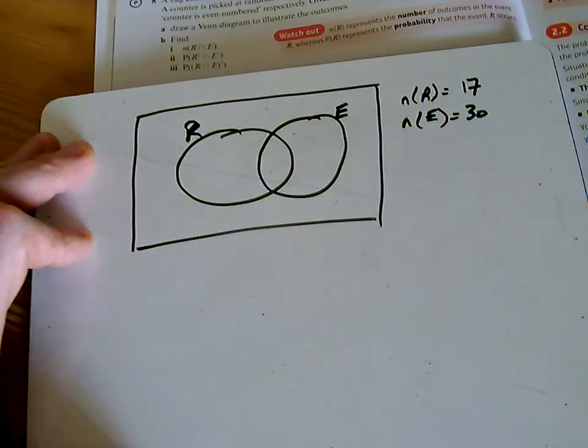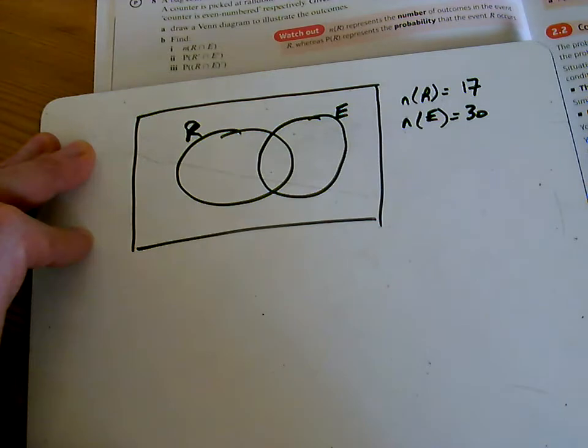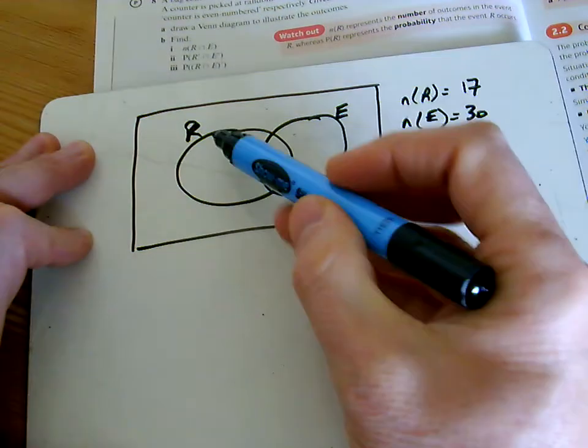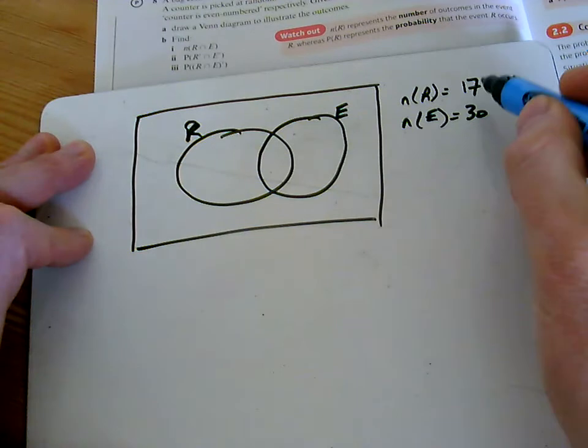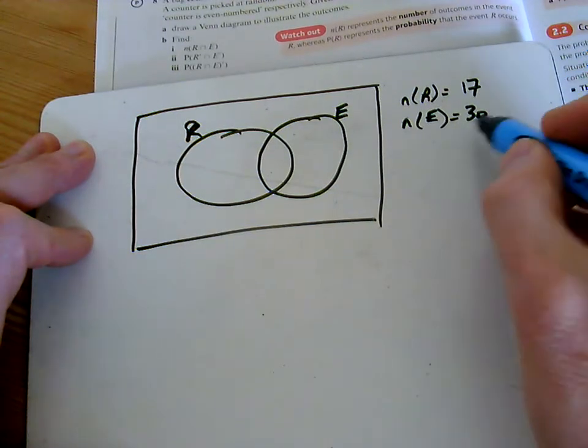Question eight. This one's talking about the numbers of things rather than the probabilities, and we have to read it through quite a bit to start with. We are just talking about red things and even numbers, and they say that there's 17 reds and 30 evens.